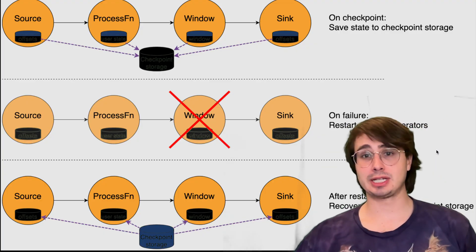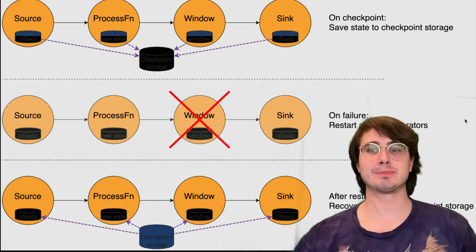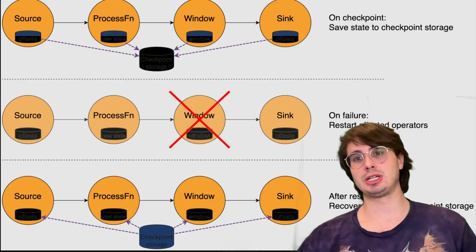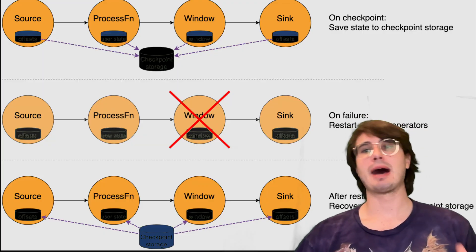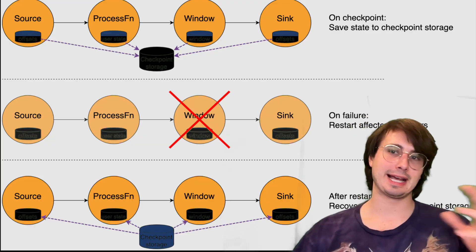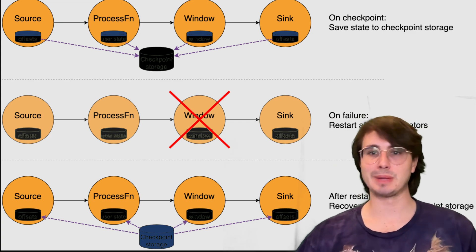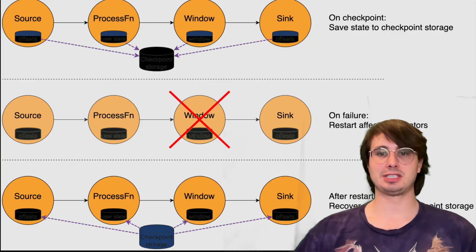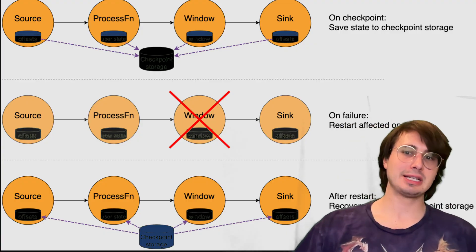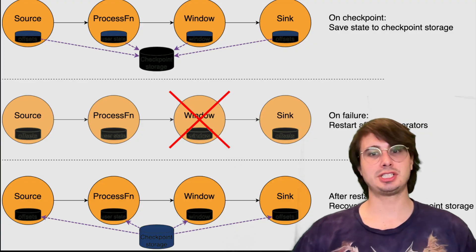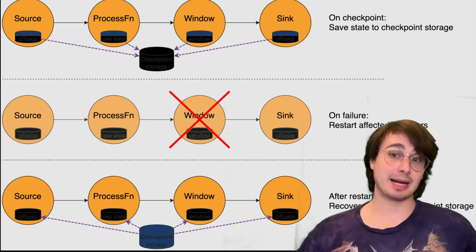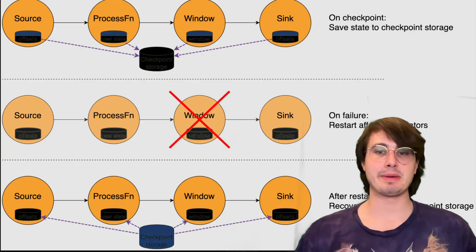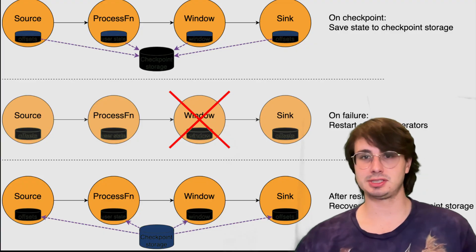Checkpoint storage location will critically impact both performance and reliability. For production environments, use distributed storage systems like object stores — S3, Google Cloud Storage, Azure Blob Storage — which offer excellent durability and cost efficiency with only slightly higher latency. When using object stores, make sure you're also configuring appropriate connection pools and timeout settings to handle occasional slowness.